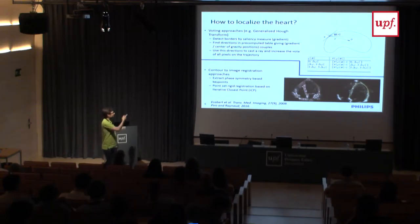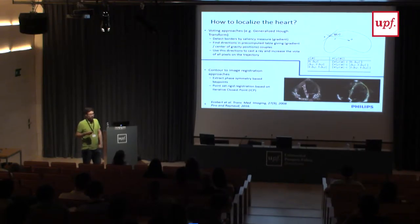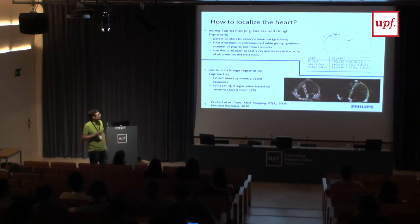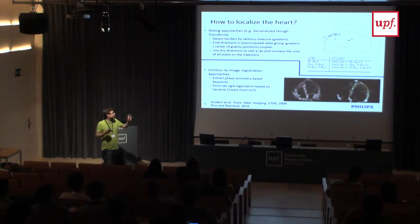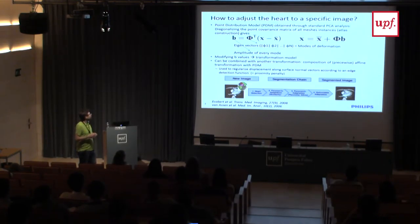There are many other possibilities for localization. Another approach uses registration and key point detection with an average shape computed from a set of images. In a four-chamber view, the heart is more or less always in the same place, which is already a good enough estimate to then deform and detect the heart.